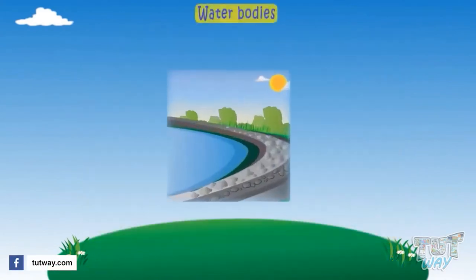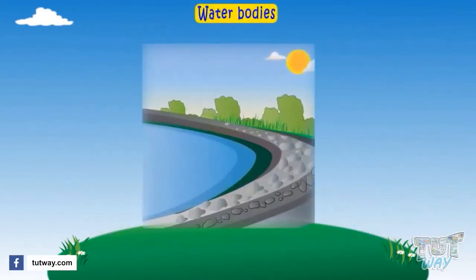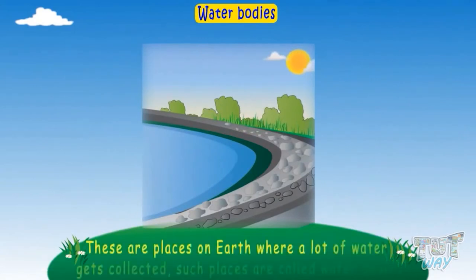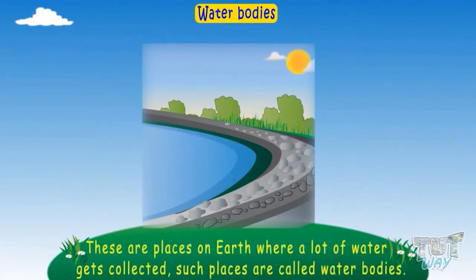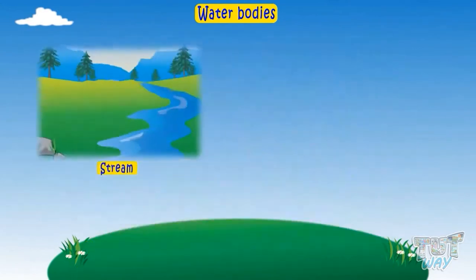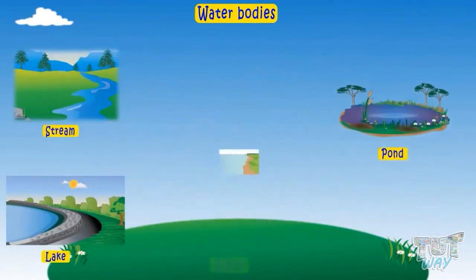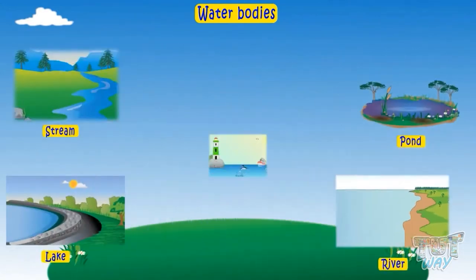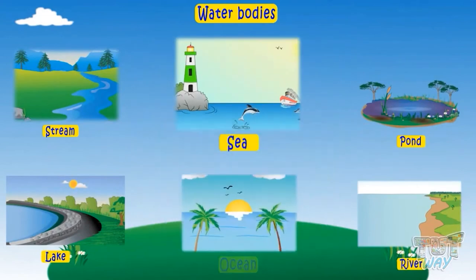Now let's learn about water bodies. These are places on Earth where a lot of water gets collected; such places are called water bodies. Streams, lakes, ponds, rivers, seas, and oceans — different types of water bodies are there on Earth.